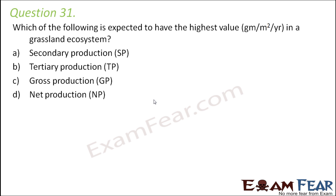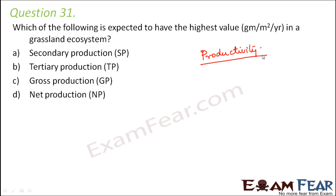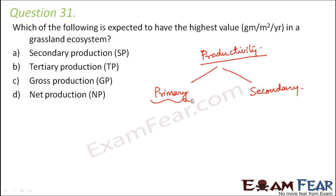When we talk about production, we are basically talking about productivity or production ecology — they are the same terms. Productivity measures the rate of production of organic matter in different components of an ecosystem. There are two types of productivity: primary productivity and secondary productivity. Primary productivity is the total energy accumulation by the green plants as biomass or organic matter.